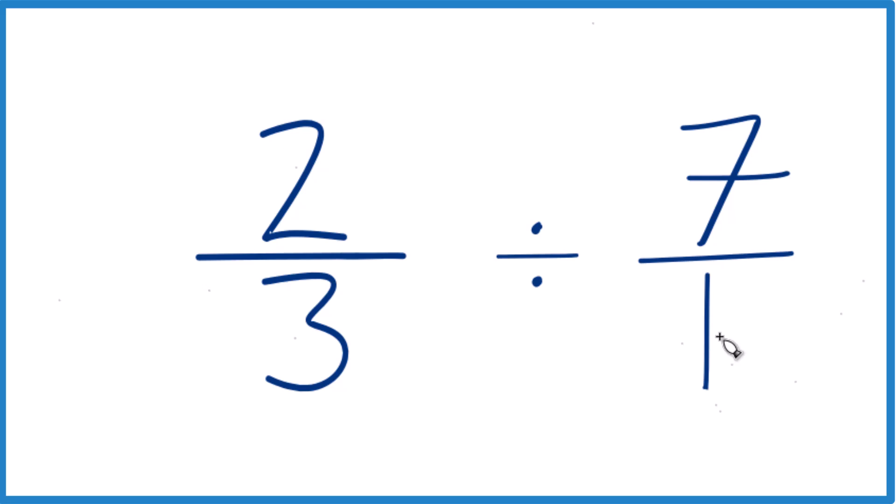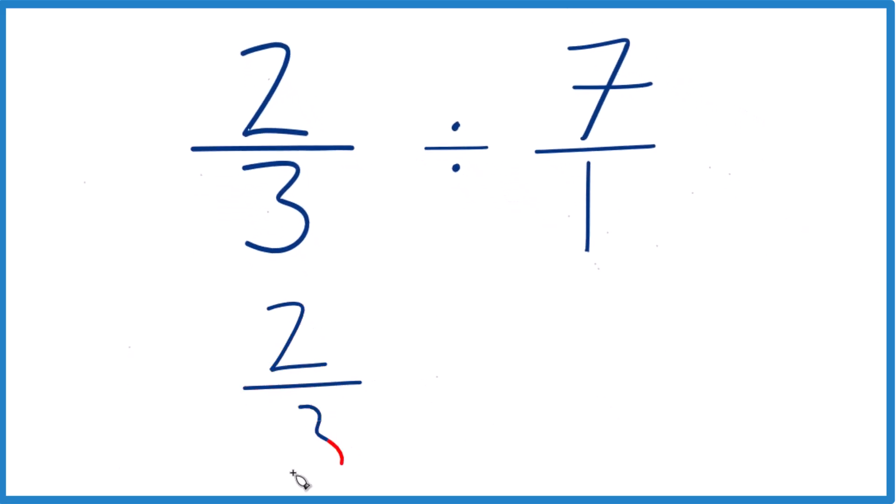But now everything's lined up. We'll take our two-thirds here, and instead of division, we're going to multiply by the reciprocal of seven over one. Denominator goes on the top, numerator to the bottom. So one over seven, or one-seventh.